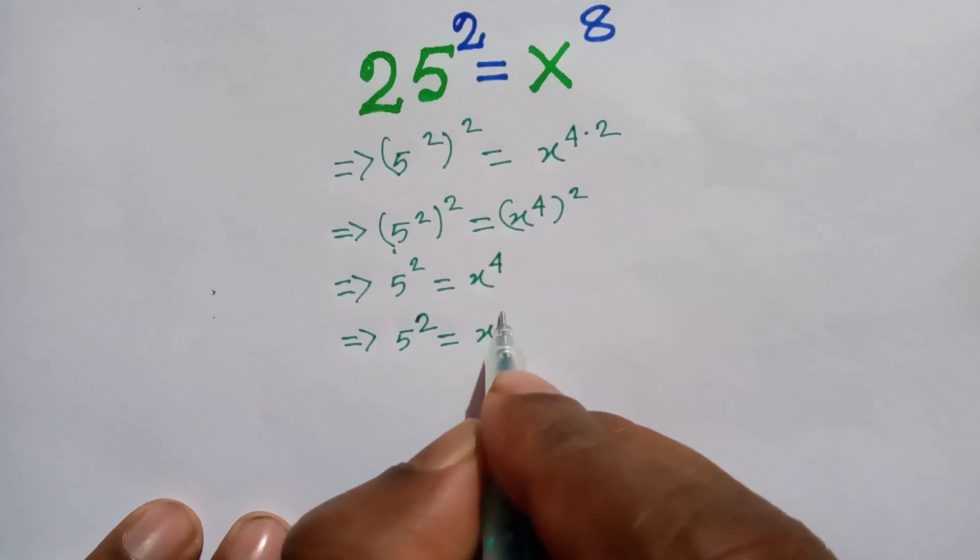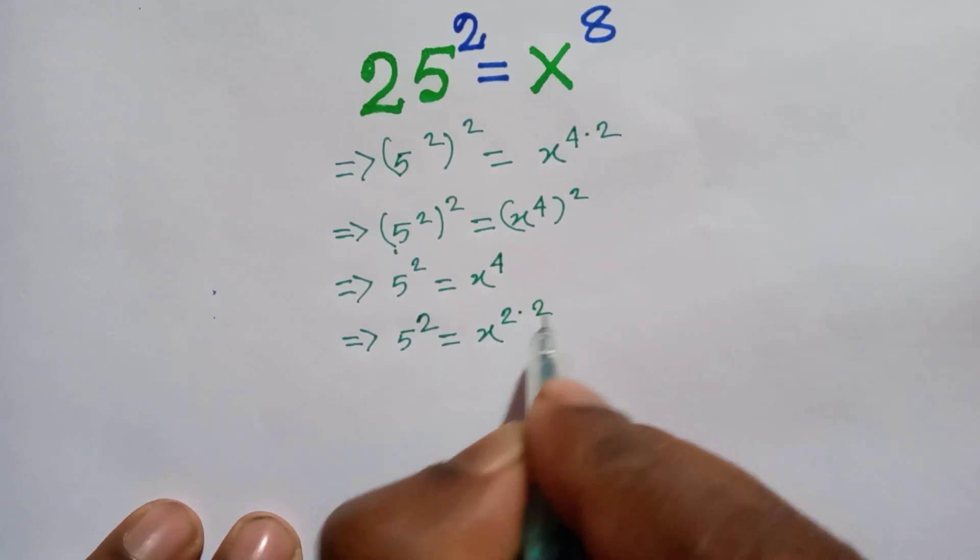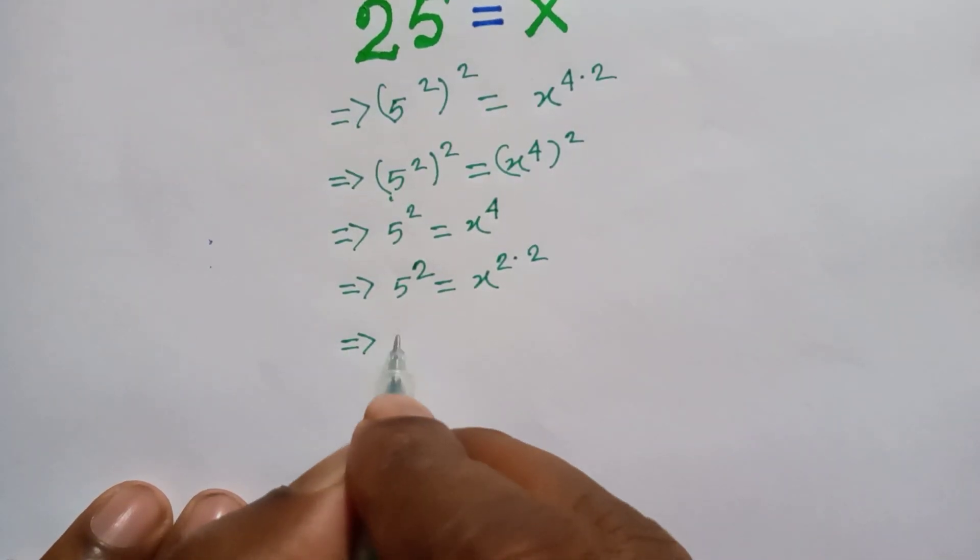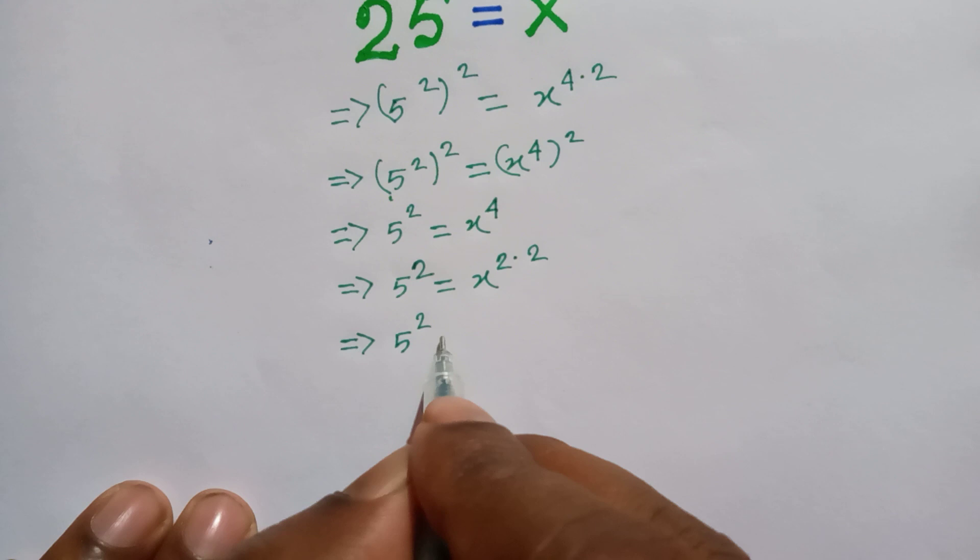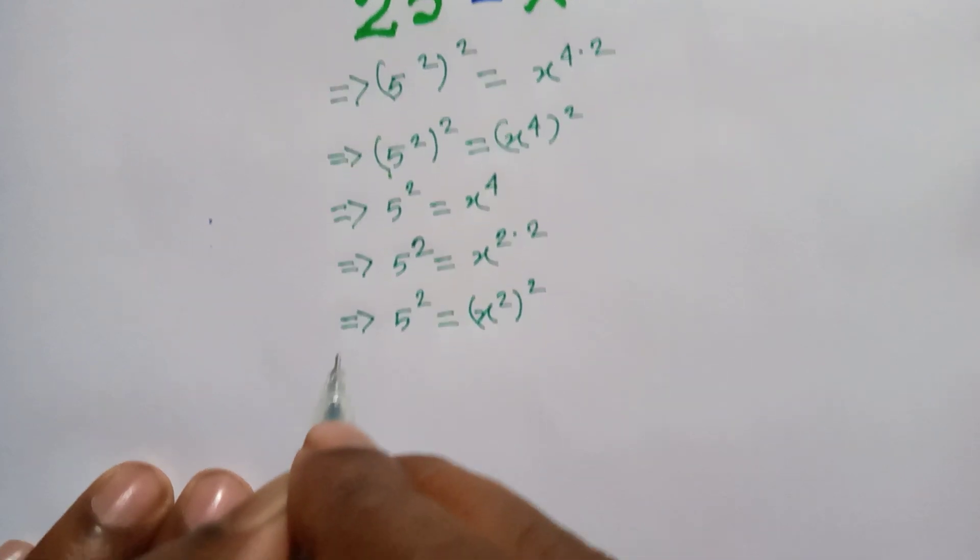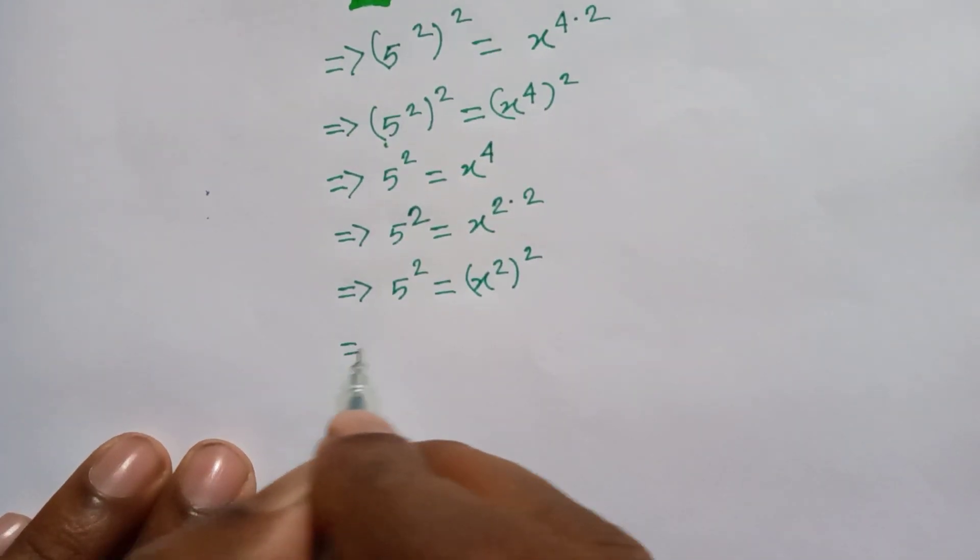This can be written 2 times 2, or 5 square is equal to x square whole square.